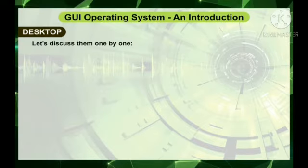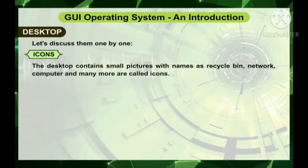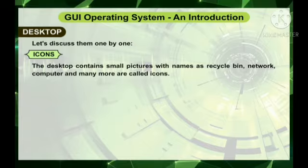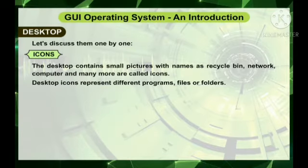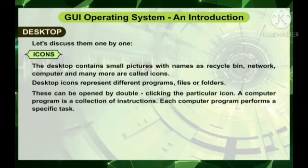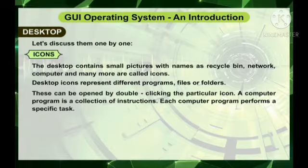Let's discuss them one by one. The desktop contains small pictures with names such as recycle bin, network, computer and many more. These are all called icons. Desktop icons represent different programs, files or folders. These can be opened by double clicking the particular icon. A computer program is a collection of instructions, and each computer program performs a specific task.